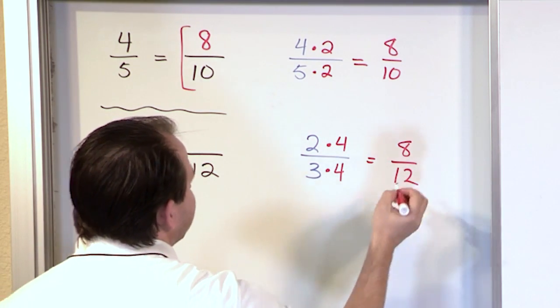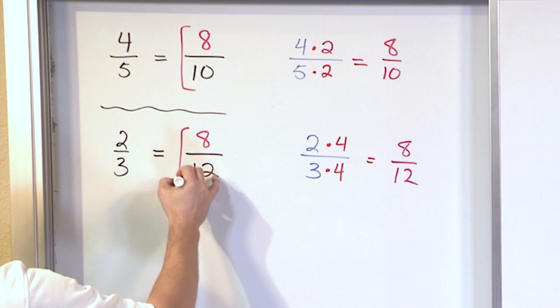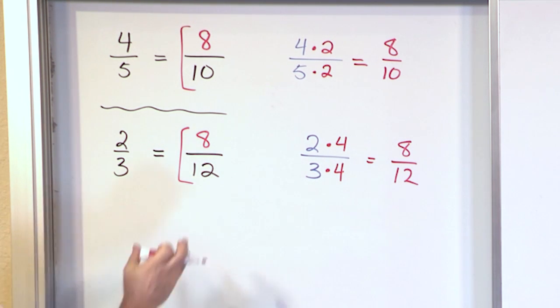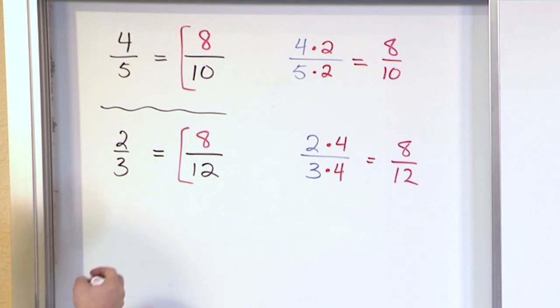The bottom number is 12. So this is going to be 8 twelfths. This fraction, 8 twelfths, is the same as 2 thirds.